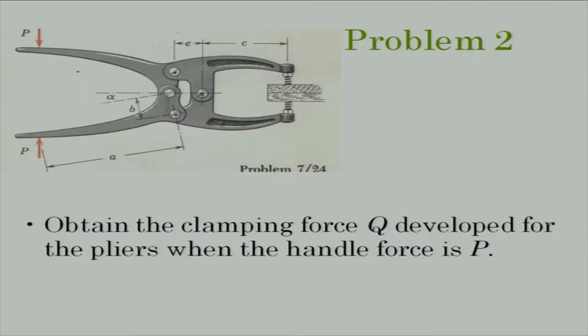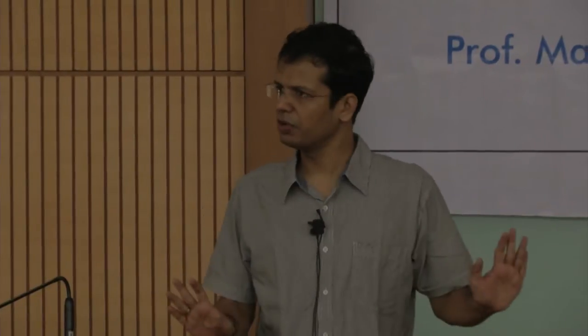Can we move on to the next problem? We have the same kind of plier. We are asked to find the clamping force Q in terms of the parameters of the system. The parameters are c, e, alpha, b, and a - four dimensions and one angle. For these dimensions, given force P, what is the clamping force Q produced at the clamping points?